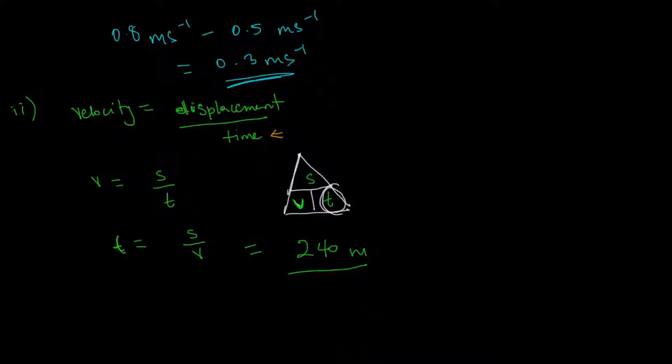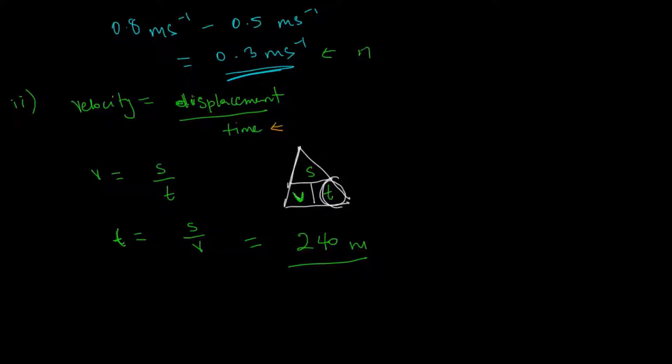And we said that the maximum speed was, this was the maximum speed toward the beach. So 240 divided by our velocity, which is the maximum velocity, is 0.3 meters per second. And that works out to be 800 seconds.